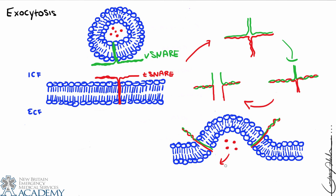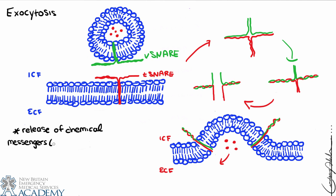The contents are released into the ECF. When we consider exocytosis, we're largely talking about the release of things like chemical messengers — neurotransmitters or hormones — as well as waste products. There are lots of things to keep in mind.